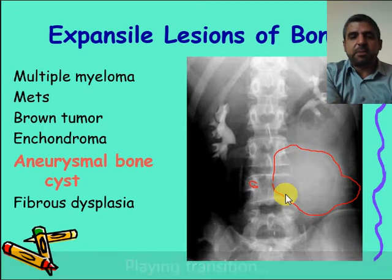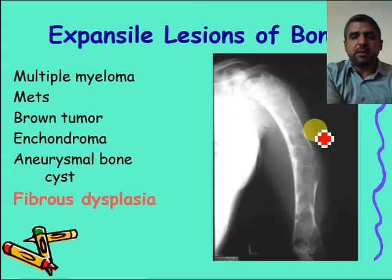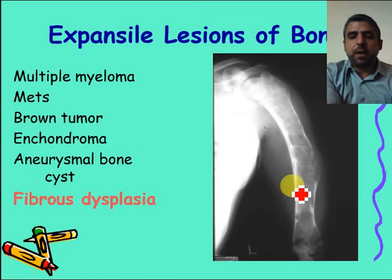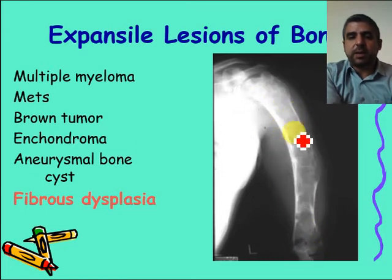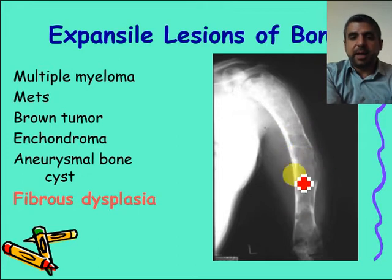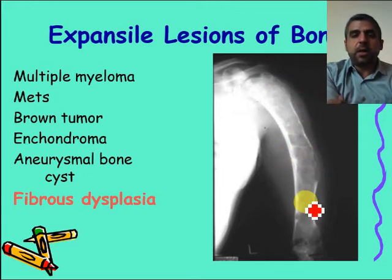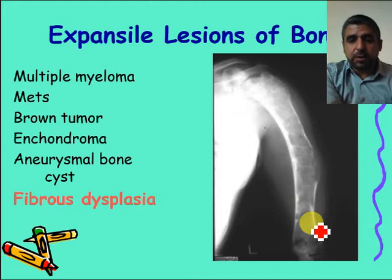Fibrous dysplasia is a dysplastic process involving the whole bone. The bone is widened and has an abnormal shape. It is a benign but expansile bone lesion.